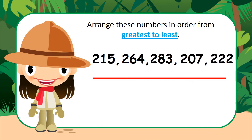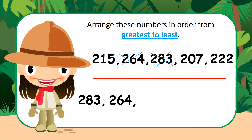For this slide, we have to arrange these numbers in order from greatest to least. Can you tell the boys and girls what it means to order from greatest to least? It means from the greatest number to the smallest number. What is the biggest number here? 283 — very good! Let's cross that one out. What's the next biggest number? 264 — very good! Let's cross out 264.